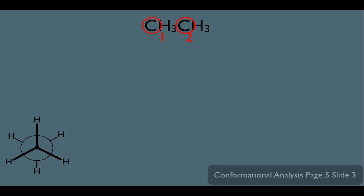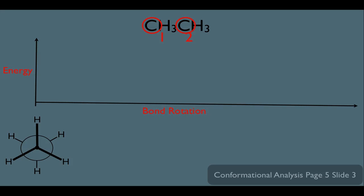Now let's overlay on top of this the energy versus bond rotation graph. Basically, on the y-axis is energy, and on the x-axis is bond rotation. What we're going to do here is start on the zero point of the x-axis with this Newman projection. If we were to graph this structure, it would be roughly right here, meaning the energy for this Newman projection would be very low.